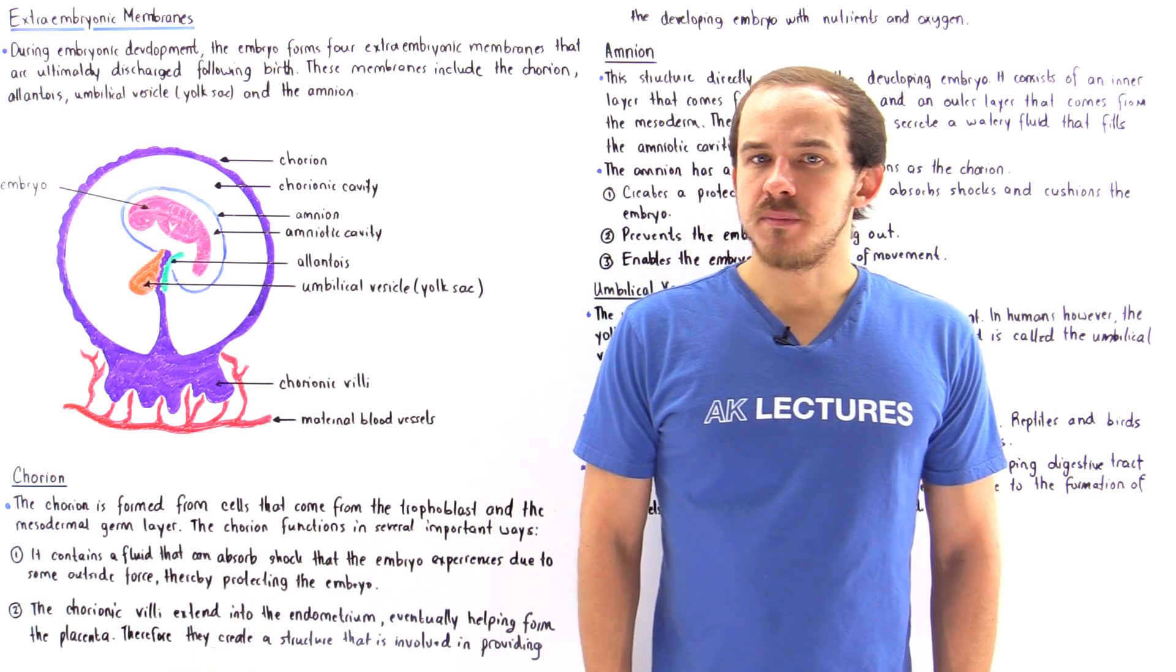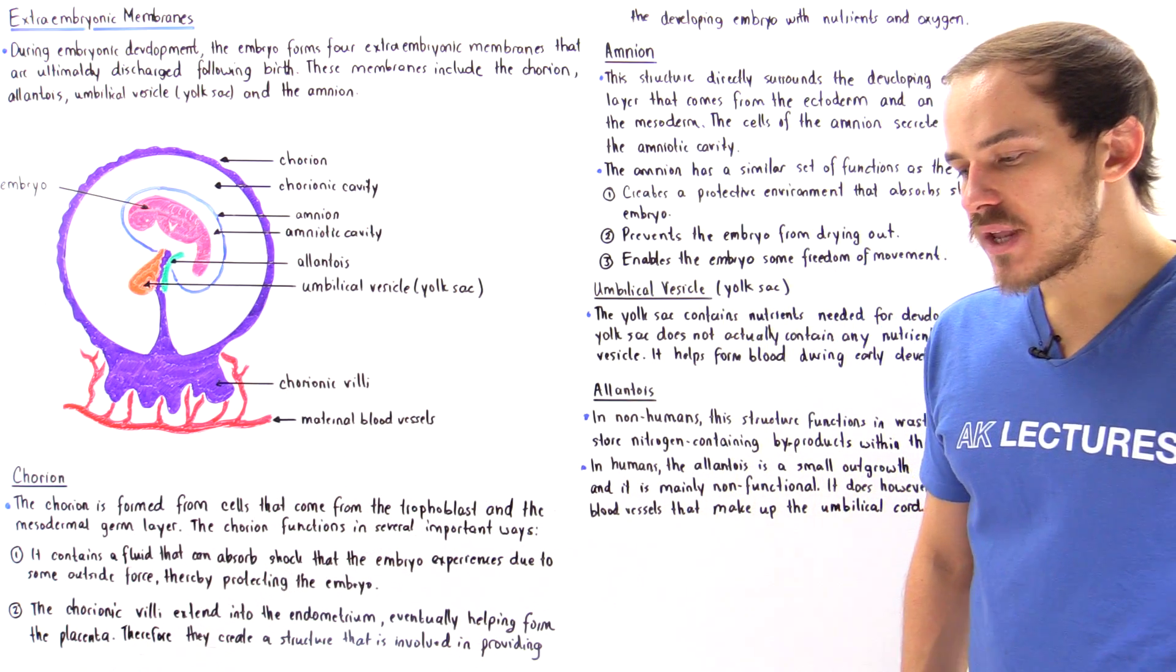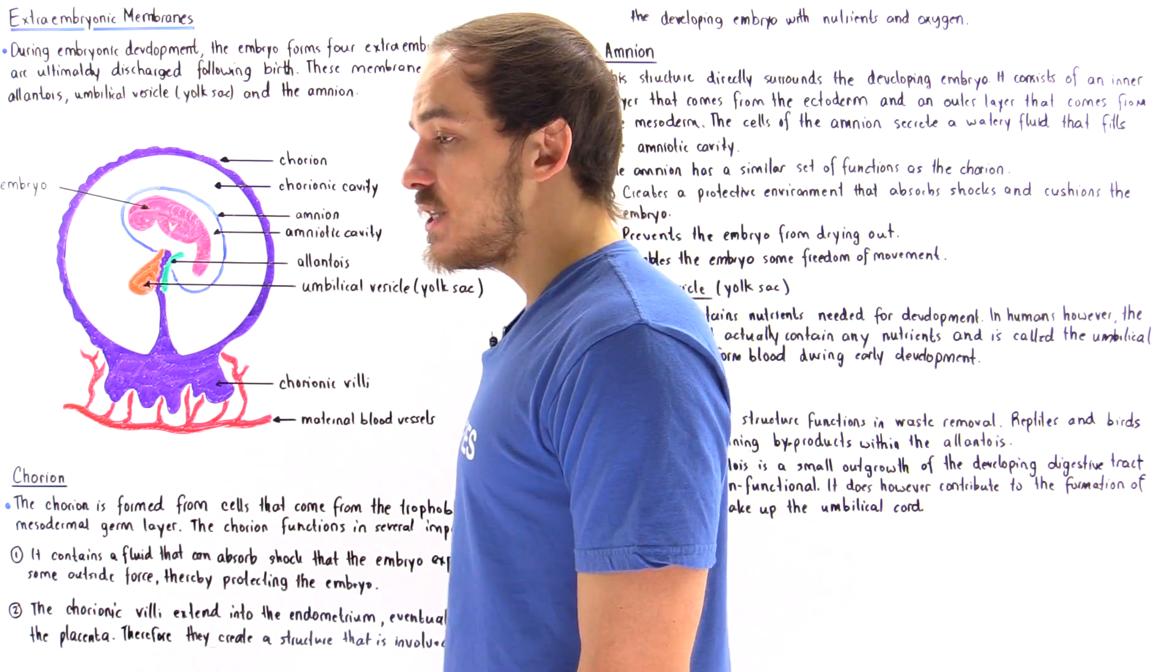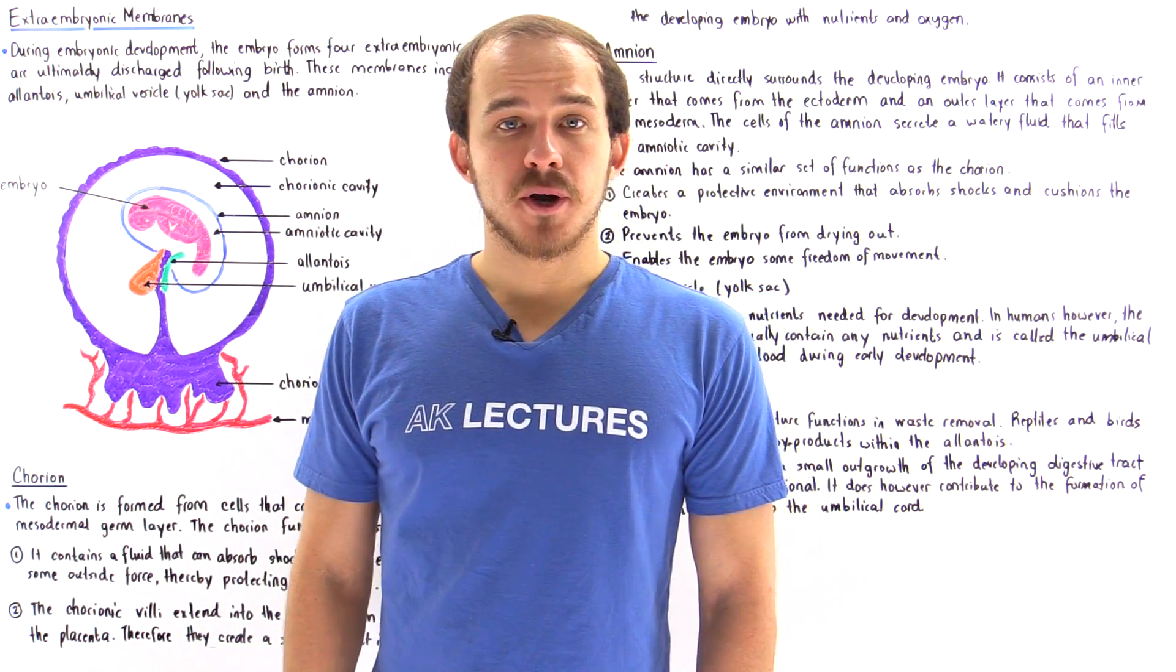During embryological development, when the embryo is developing into that adult organism, there are four extra embryonic membranes that are formed. And these four membranes are eventually discarded by that individual following birth.